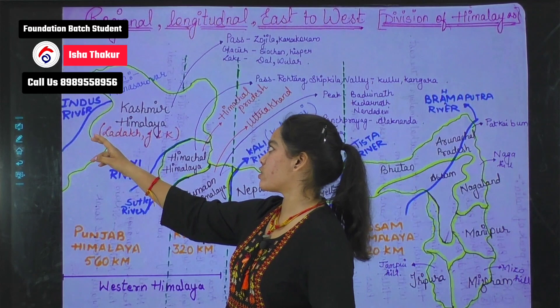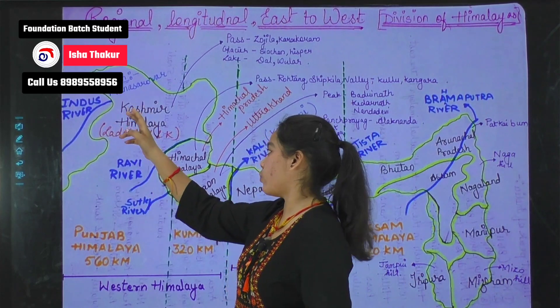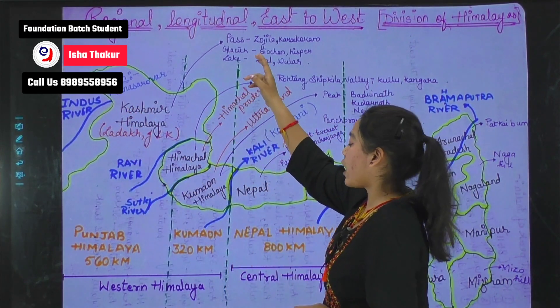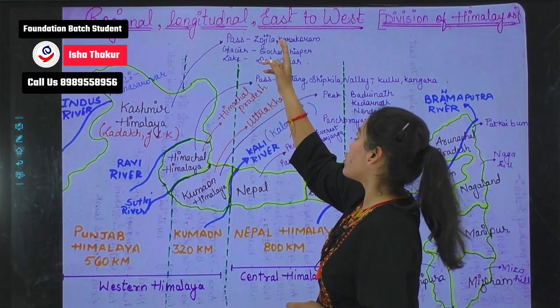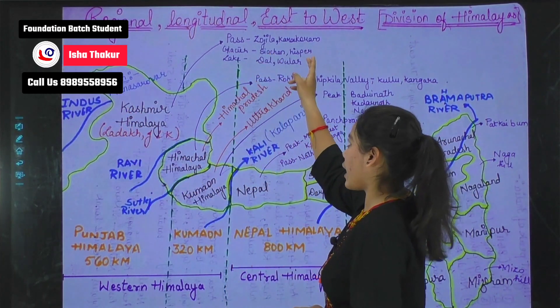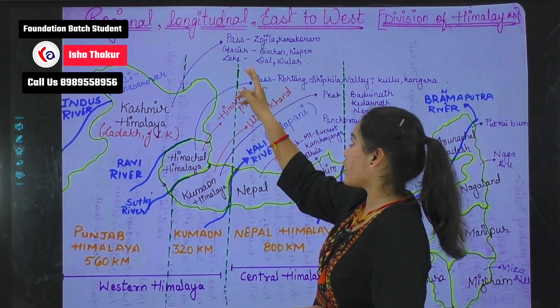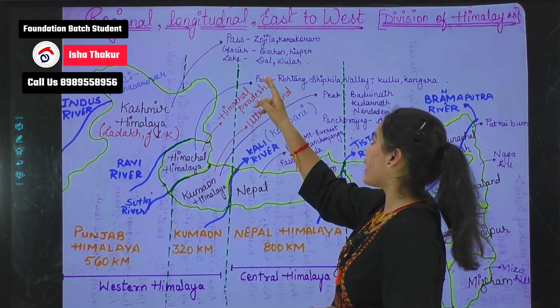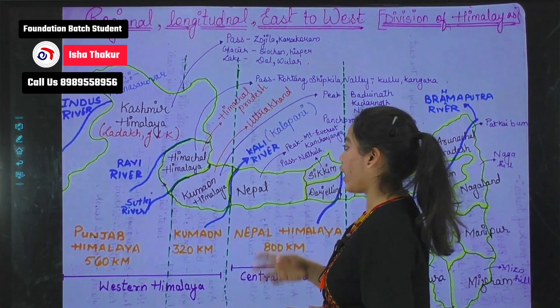The origin of the Indus River is Mansar River. There are some passes in Kashmir Himalaya: Zojila and Karakoram. Glaciers include Siachen and Hispa. Lakes include Dal and Wular.